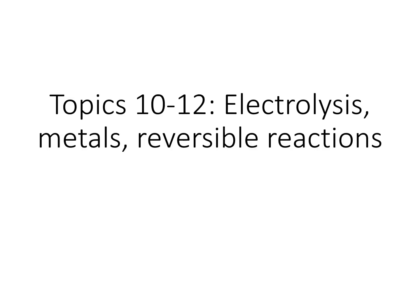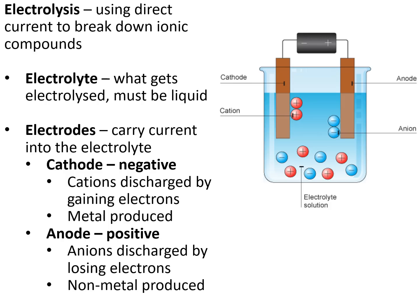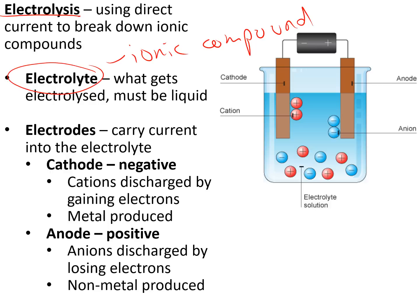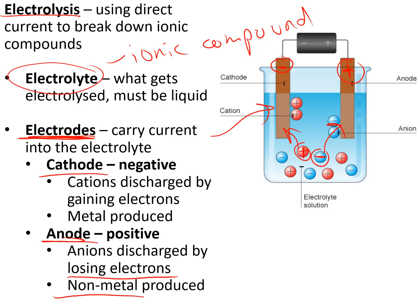Topics 10 to 12: electrolysis, metals, and reversible reactions. Electrolysis is using direct current to break down ionic compounds into the elements they're made from. The electrolyte is an ionic compound in liquid form — either dissolved or melted. Electrodes are the conducting materials stuck into the electrolyte to carry the electric current. The cathode is the negative electrode — cations (positive ions) go to the cathode and get discharged by gaining electrons, producing metal. The anode is the positive electrode — anions (negative ions) go there and get discharged by losing electrons to produce non-metals, normally as gas.